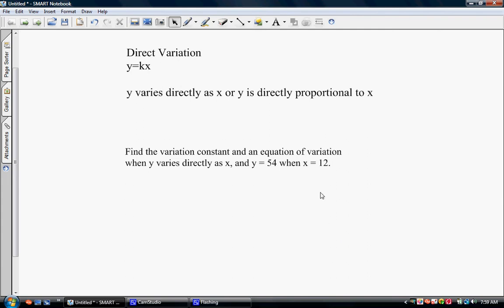Direct variation has a template equation, and by that I mean every kind of direct variation will use this particular equation – y equals kx. The y and the x are part of the problem. The k is what we call the variation constant. You'll see it like this – y varies directly as x, or you might see y is directly proportional to x when you know that you're going to have to do a problem involving direct variation.